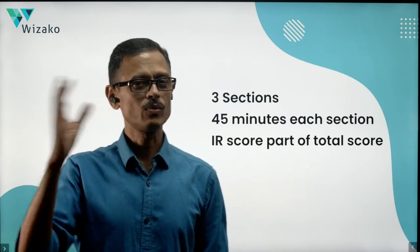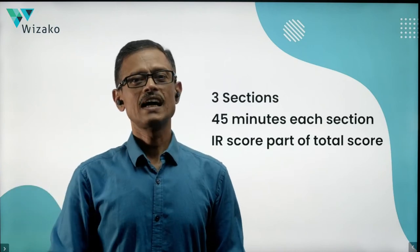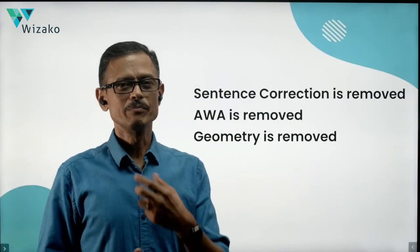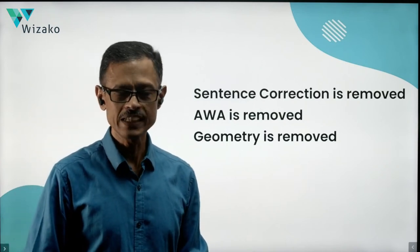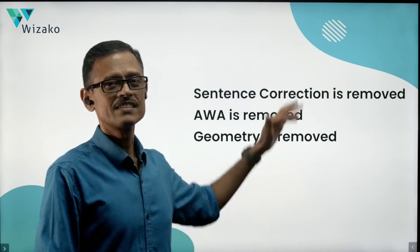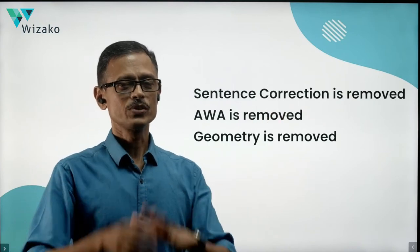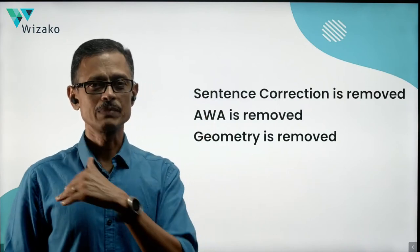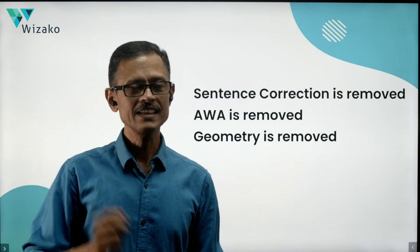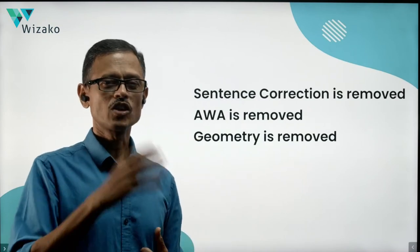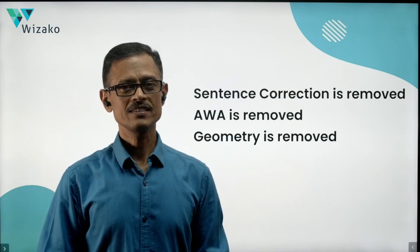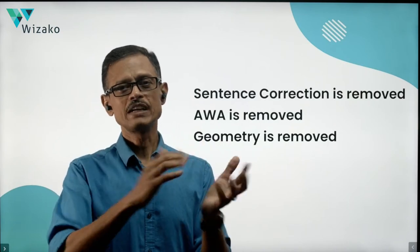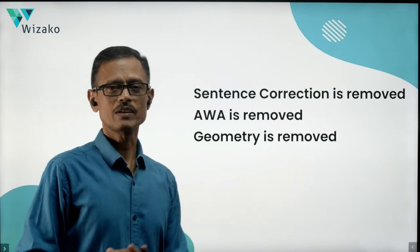IR, which used to be a standalone score on a scale of 1 to 8, is now coming into the main score as an integral part. Also, sentence correction is completely removed from the focus edition — so if you had difficulty with it, you should probably wait for the focus edition. The essay section AWA is completely removed too — every question is now objective type. And in quant, geometry is removed. It's only arithmetic and algebra.